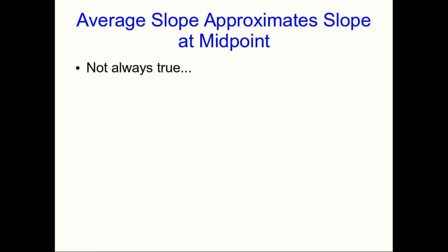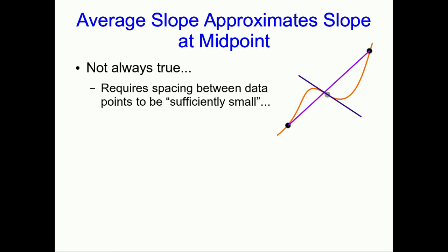Now, you can think about this and see that this is not always going to work. So, for example, here's a curve, and here are two points that we've got. Let's say those are our data points, and perhaps unknown to us, the curve does that in between. Well, clearly, the line connecting the two points gives an extraordinarily poor approximation to the slope at the midpoint. So, for this to work, it requires that the spacing between your data points be sufficiently small, one of those marvelous vague phrases. And because this is a 15-minute video lecture in a first-year course, I'm just going to leave it at that.